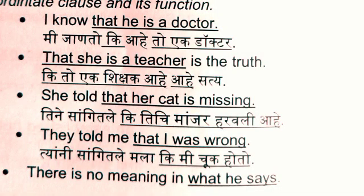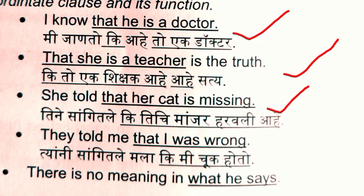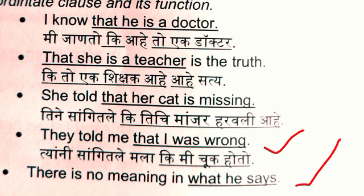Now look at these sentences and try to understand which part is the subordinate clause. The underlined parts are the subordinate clauses: 'I know that he is a doctor'; 'That she is a teacher is the truth'; 'She told that her cat is missing'; 'They told me that I was wrong'; and 'There is no meaning in what she says.' All the underlined parts are subordinate clauses — they are typically nominal that-clauses.